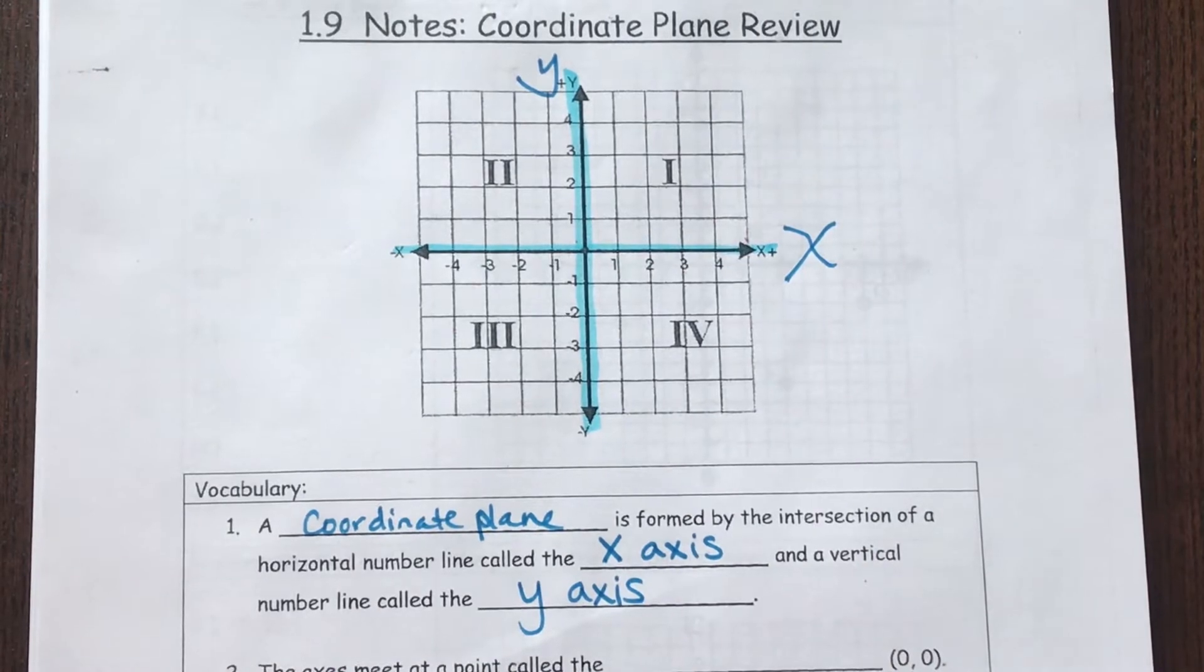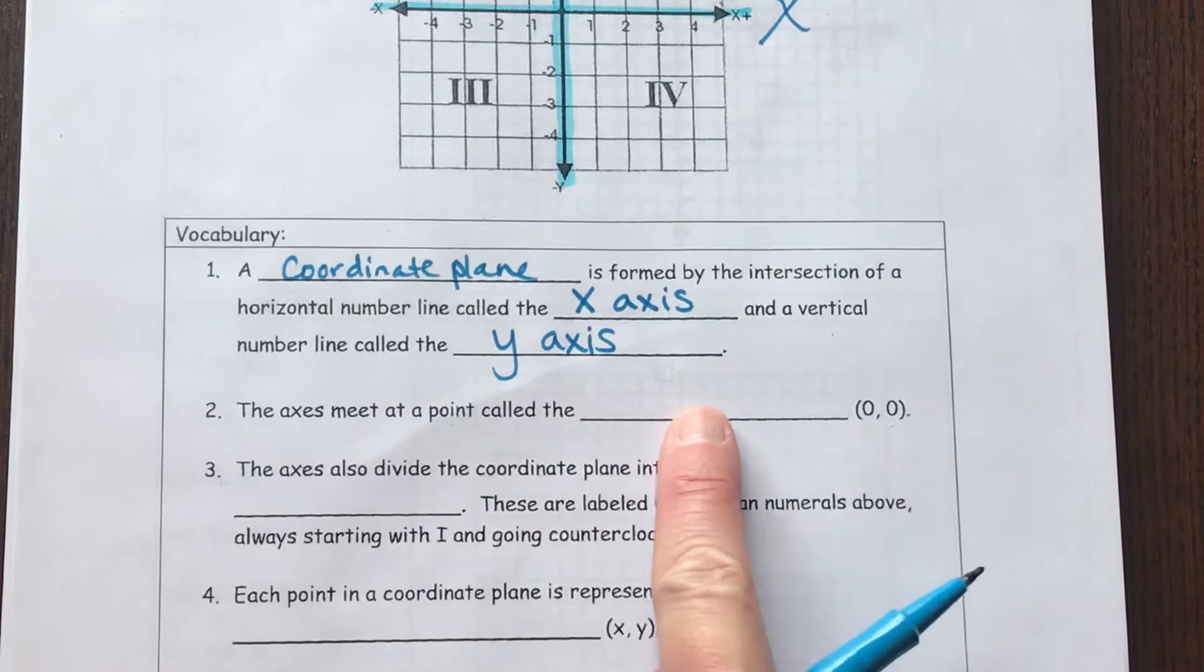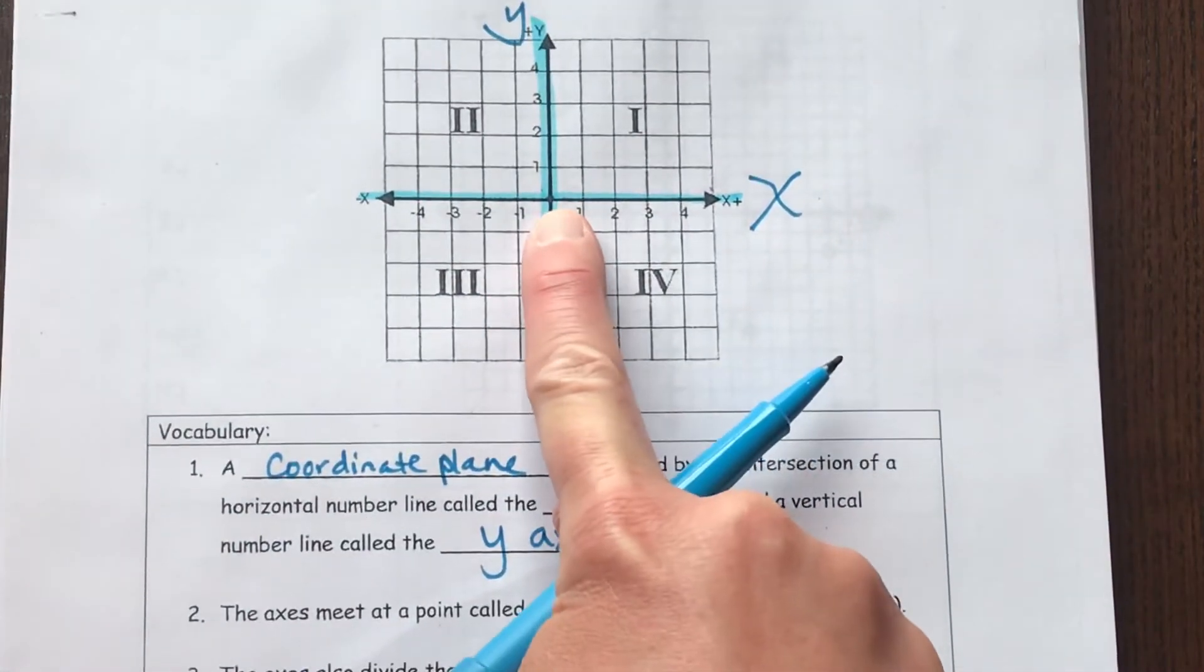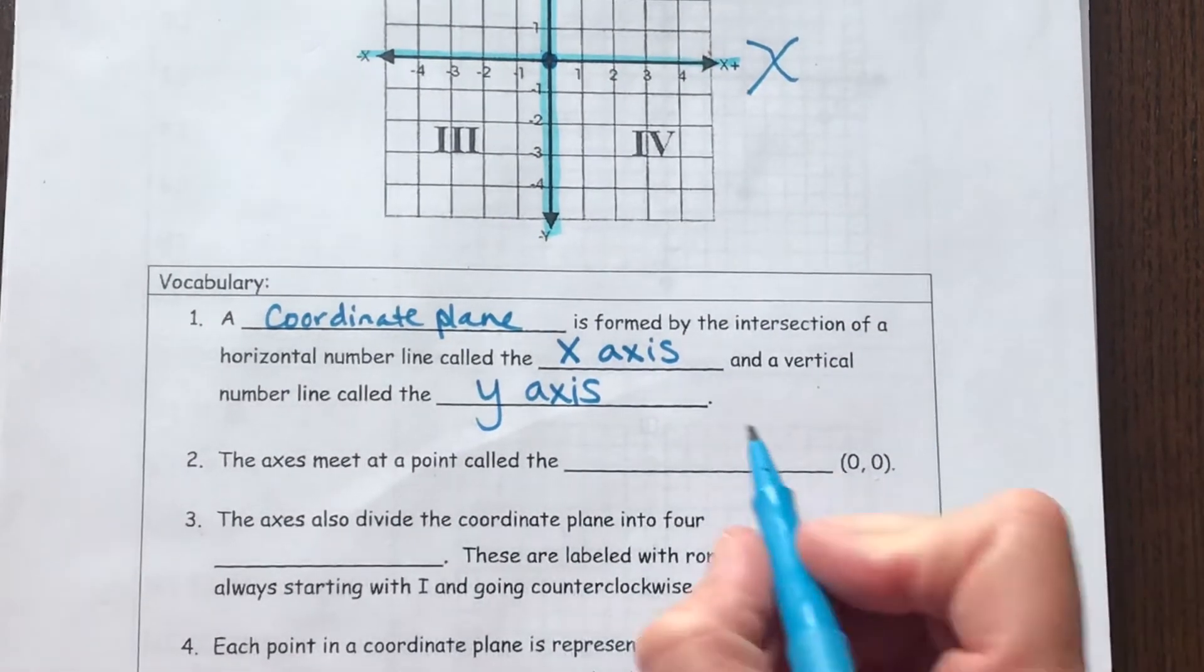So now our second blank says the axes meet at a point, and that point where these two axes meet is actually called the origin.